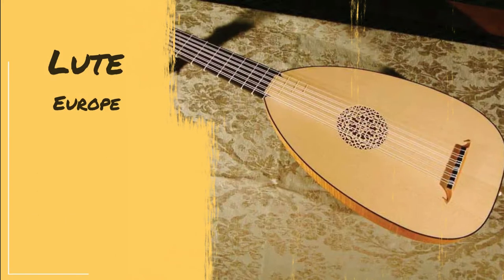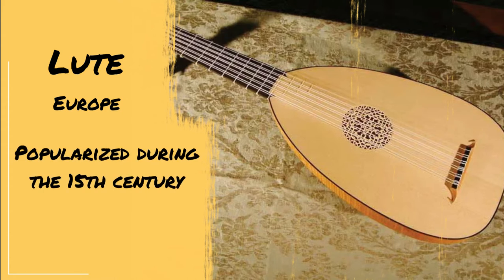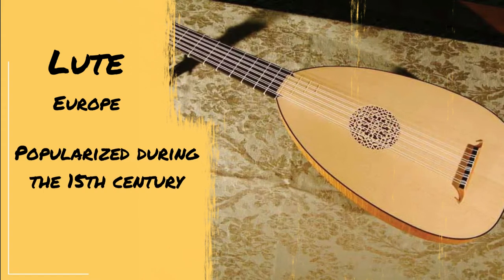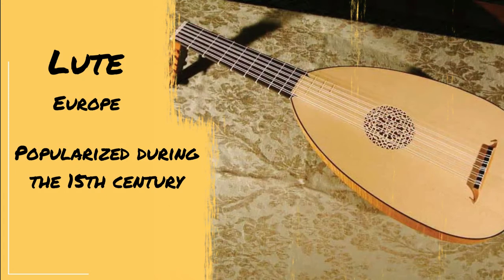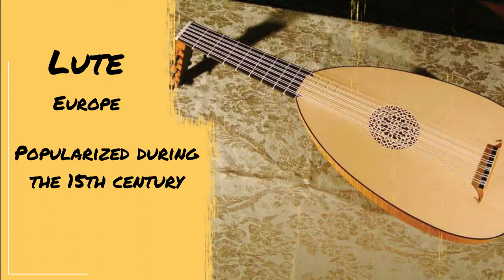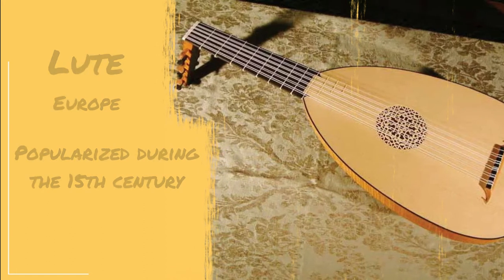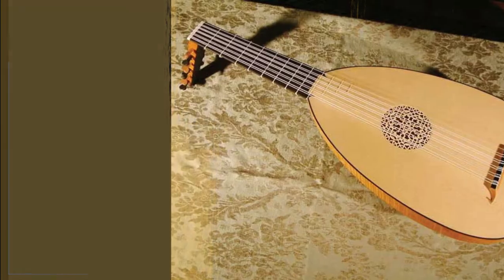The lute was prominent in European art during the Renaissance and Baroque periods. The Oud was introduced to Europe via Spanish crusaders who traveled to Middle Eastern and North African countries. By the 16th century, the lute had six courses of strings, but some variations could have up to 20 or 30 strings. The instrument would be tuned to notes G through G.